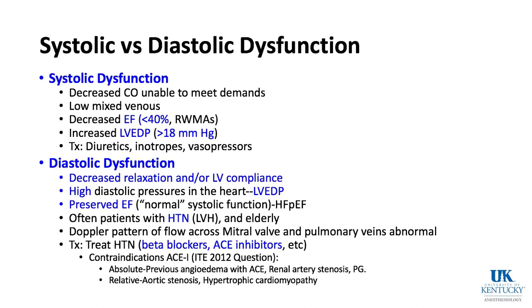ACE inhibitor contraindications: the absolute contraindication is previous angioedema with ACE inhibitors — ACE inhibitors not only reduce angiotensin 2 production but also reduce bradykinin breakdown, causing bradykinin buildup that can cause angioedema. Other absolute contraindications include renal artery stenosis and pregnancy. Relative contraindications include situations where you don't want to drop vascular resistance, such as severe aortic stenosis or hypertrophic cardiomyopathy.